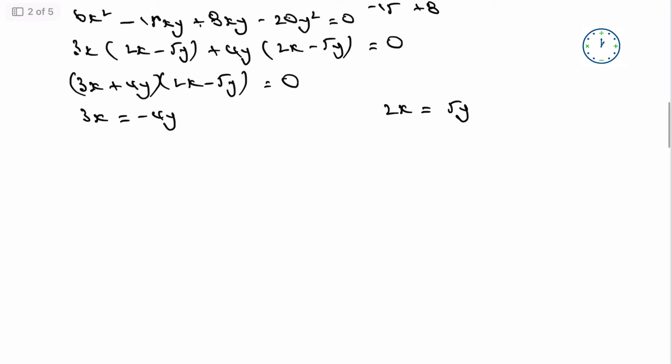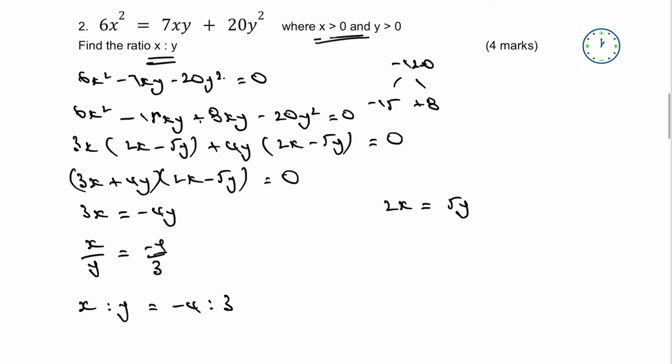So the first one I can actually say, if I've got x/y, that's going to equal to -4/3. So therefore, I've got x:y is going to be equal to -4:3. Well, that's not going to work for me because I've got to have a positive value of x. So actually, I'm going to dismiss that particular one.